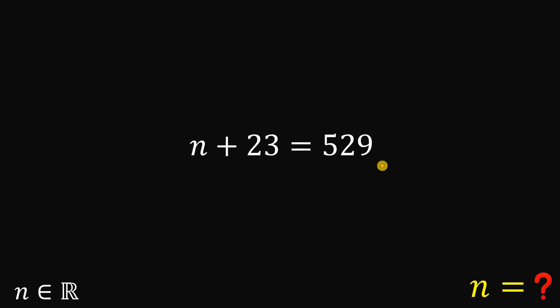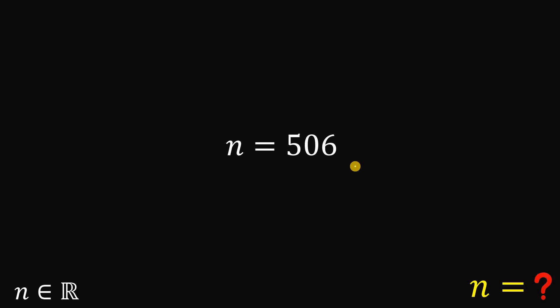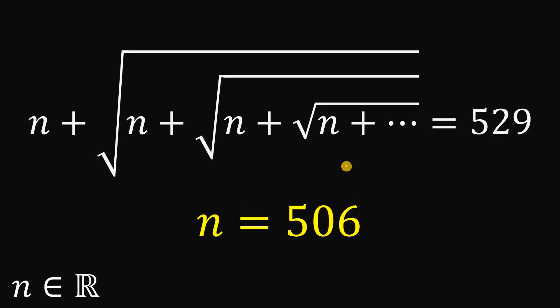So our original equation becomes n plus 23 equals 529. If we subtract 23 from both sides to solve for n, we get n equals 529 minus 23, which equals 506. Therefore, given the equation n plus square root of n plus square root of n until infinity equals 529, the real value of n is 506.